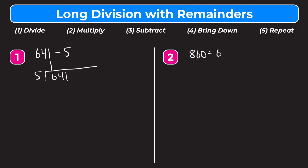Our next step is multiply. We just did that: 1 times 5 is 5. We put that under the 6. Step 3 is subtract — we subtract 5 from 6, that gives us 1. Step 4 is bring down; we bring down the next digit in our dividend, which is 4. And step 5 is repeat, so we go back to step 1, which is divide.